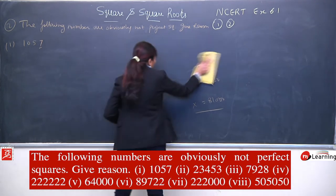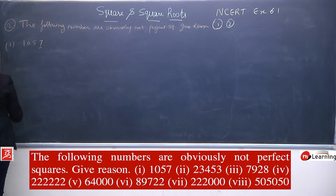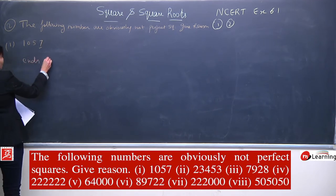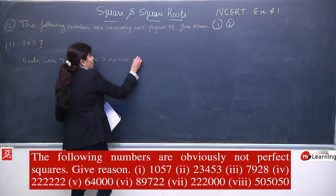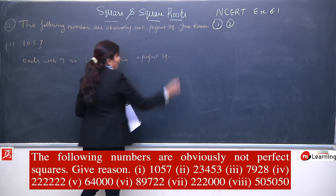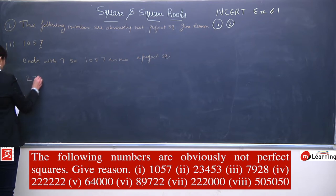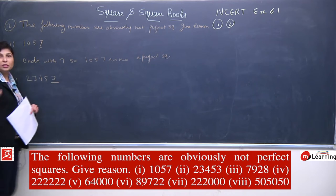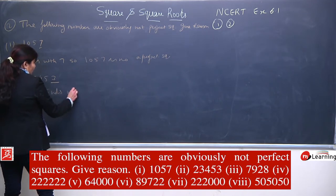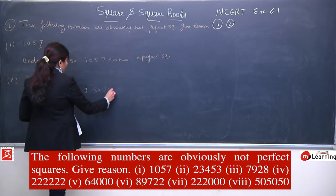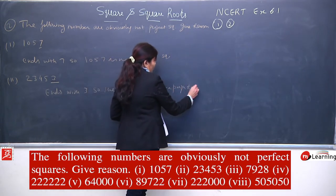Now giving reasons as per the question: first, 1057 is not a perfect square because it ends with 7. Second number is 23453 — check the unit digit which is 3. Write: number ends with 3, so 23453 is not a perfect square. Third number is 7928 — it is ending with 8. Reason: numbers end with 8, so this is not a perfect square.